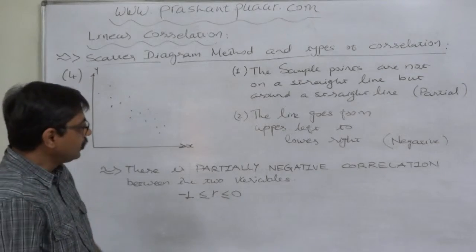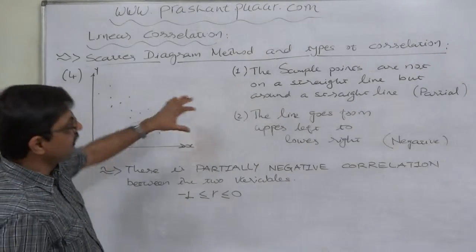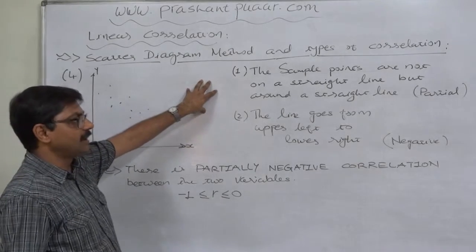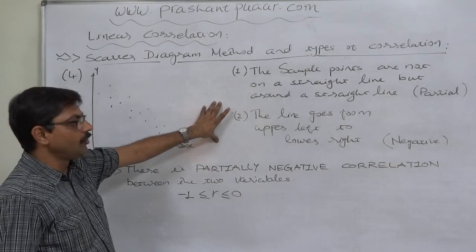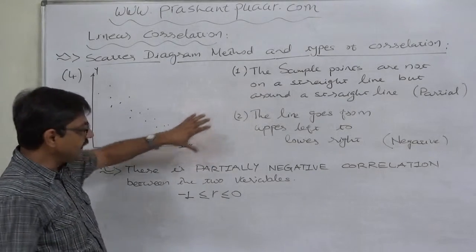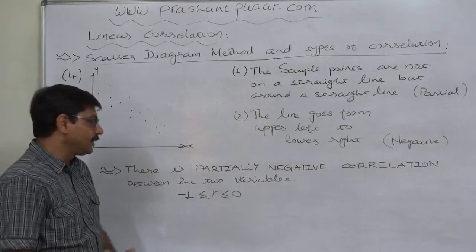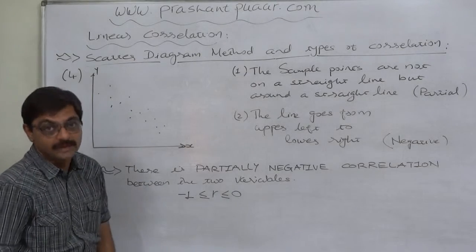Yes. So ultimately, if the sample points are not on a straight line but around a straight line, and the line goes from upper left to lower right, we can conclude there is a partially negative correlation between the two variables.